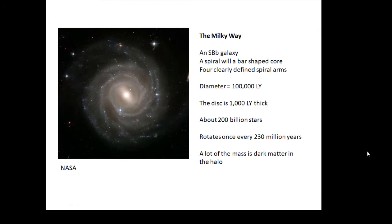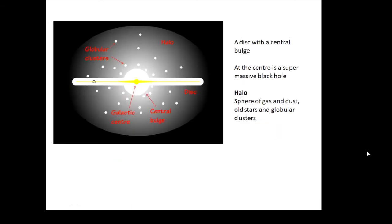Looking sideways at the disk, it's all within a sphere of gas and dust called the halo. Within the halo there are old stars and globular clusters. Inside the disk there are open clusters. There is a bulge of stars around the middle, and at the very center there is a supermassive black hole. Our Sun is about two-thirds out from the center.